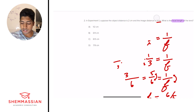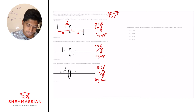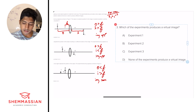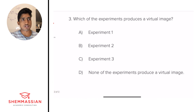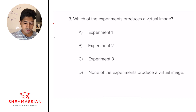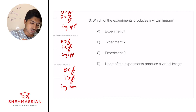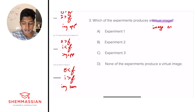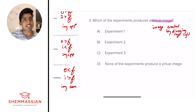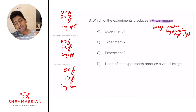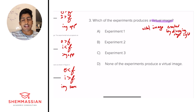On to question three: which of the following experiments produces a virtual image — experiment one, two, three, or none? A virtual image is an image created by diverging rays of light. This contrasts with a real image, which is created by converging rays of light.